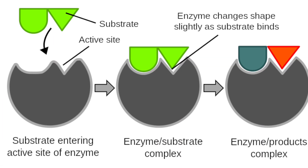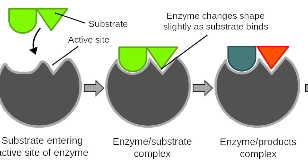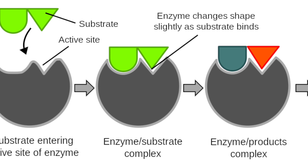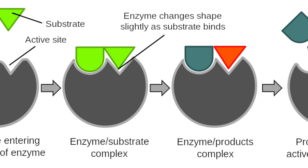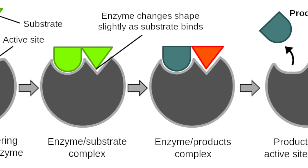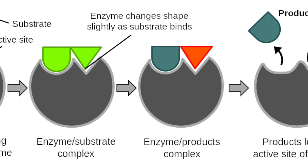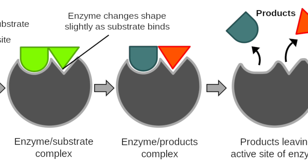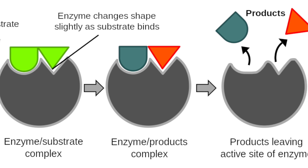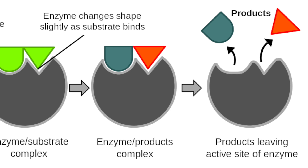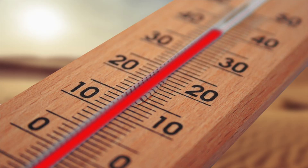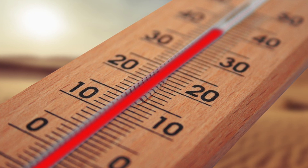How does an enzyme work? The substrate fits into the active site of the enzyme — this is like a lock and key. The enzyme and the substrate bind together so that the reaction can take place rapidly. However, there are factors which affect enzyme action, one of which is temperature.